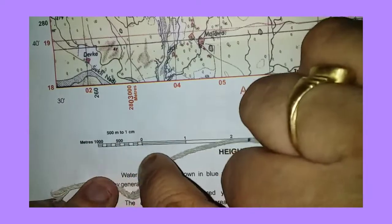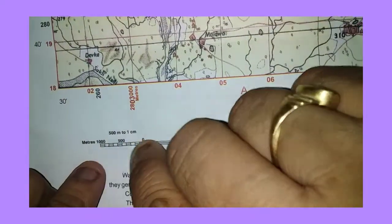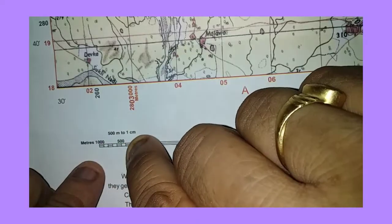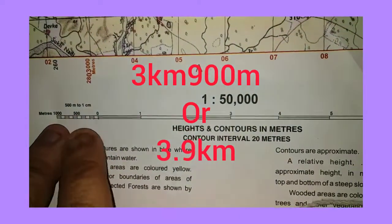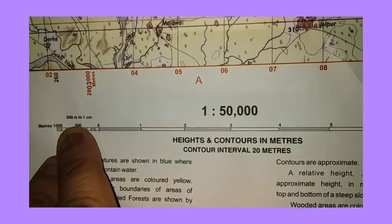Since this knot is coinciding with the 9th division, we can take it as 900 meters. Therefore, the total length will be 3 kilometers and 900 meters.